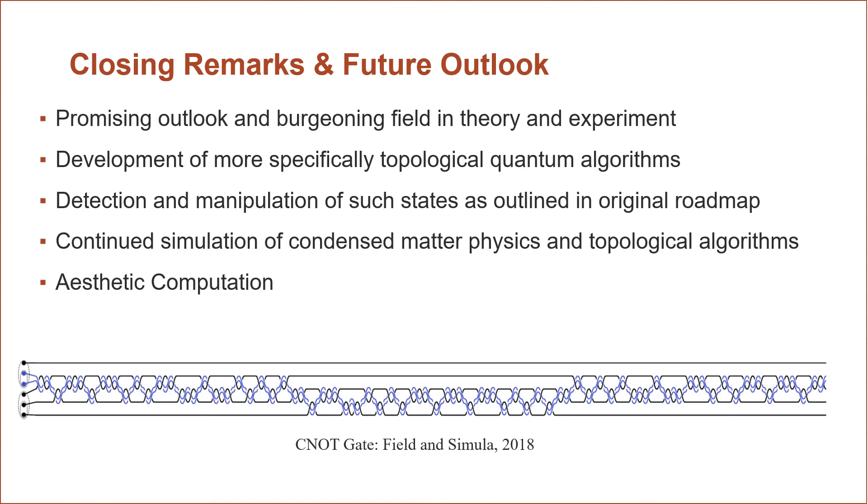In terms of closing remarks and outlook for the future, this is a very promising field in terms of material science, theoretical physics, and the theory, the actual mathematical theory behind braiding and things of that sort. It seems more and more of these topological algorithms will be developed. Obviously the detection and manipulation of states is important. And at the end of the day, this is very aesthetic, especially if you're a topologist or a sailor and you like knots. And here you can see the CNOT gate at the bottom.